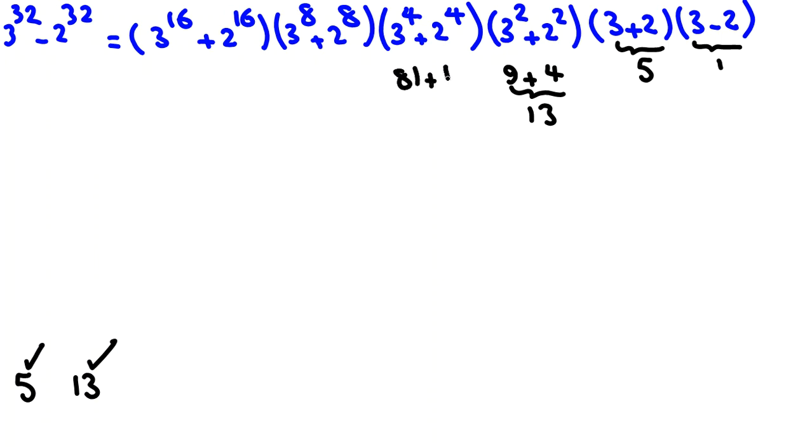The next one, 3 to the 4, 81, plus 2 to the 4, 16, is equal to 97. So third prime factor. One prime factor is left. If you calculate 3 to the 8 plus 2 to the 8, 2 to the 8 is 256. If you calculate 3 to the 8, their sum will be 6817. And if you check this number, if you check prime numbers from 3, 5, and up to 17, you will see it is a multiple of 17. And it is 17 times 401.